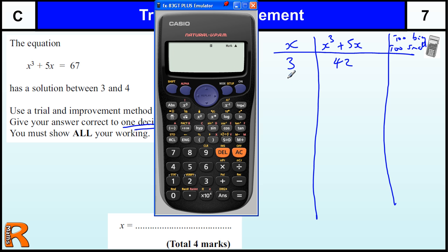Next value, we know it's between 3 and 4, so let's try 4. So 4 cubed plus 5 times 4, or 20, is 84. And we're trying to make that equal to 67, so we're trying to find that answer. So this is 42, which is too small, this is too big, so we go in between.